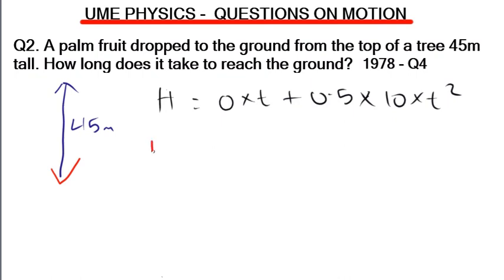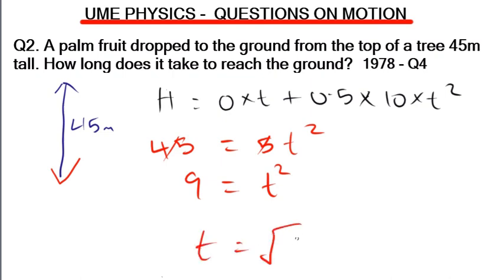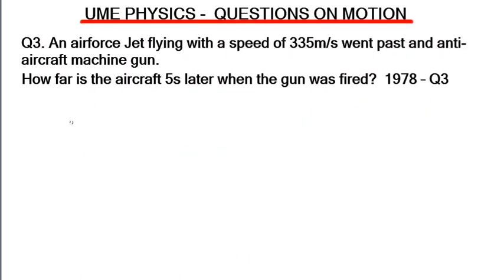From 45 = 5t², dividing both sides by 5 gives t² = 9, and the square root of 9 gives us t = 3 seconds. The time it takes to reach the ground from a height of 45 meters is 3 seconds. This applies to all free-fall problems where the object is dropped — if it were thrown, an initial velocity would be given.